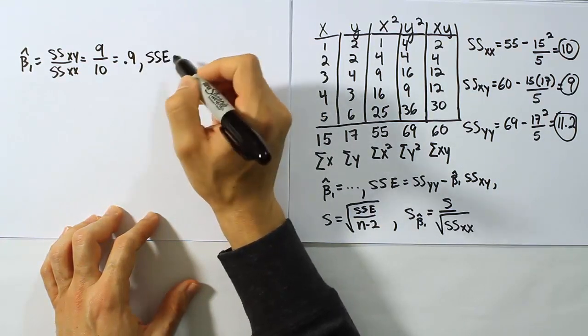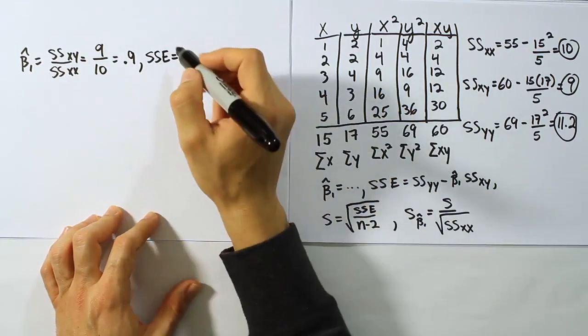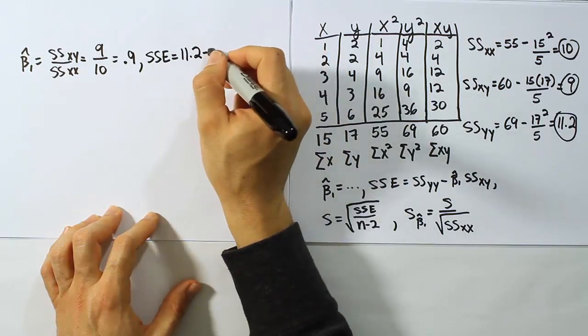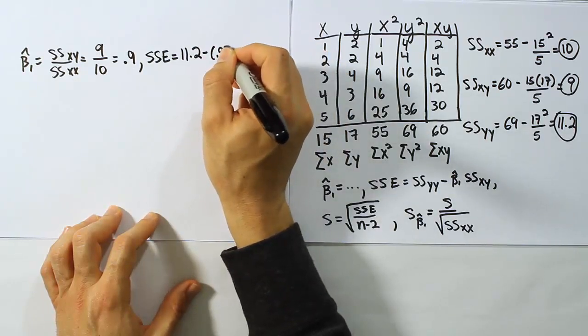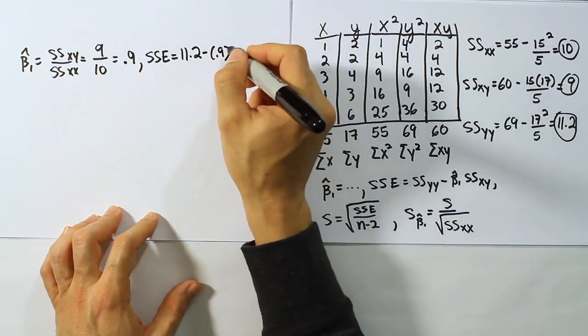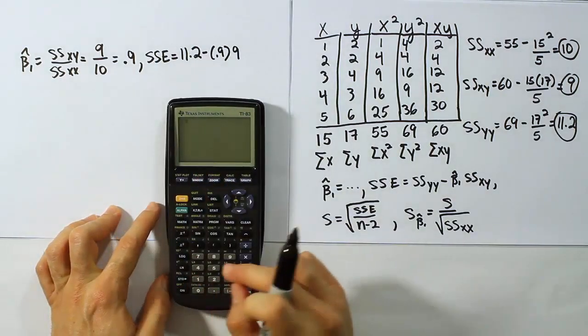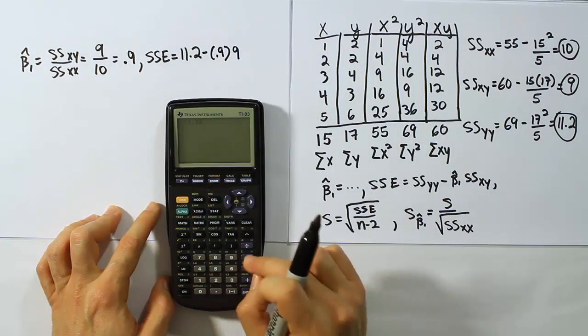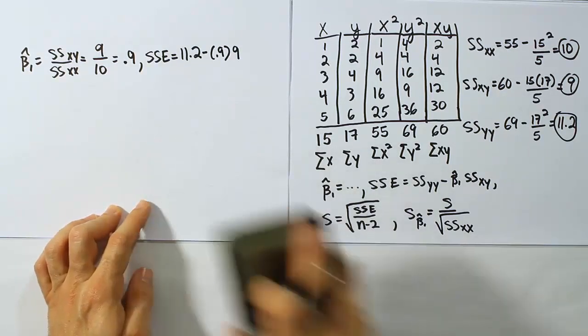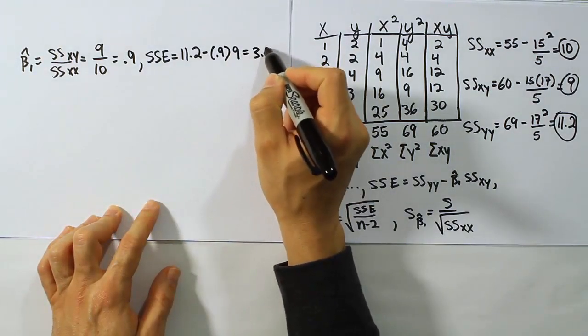So, SSE turns out to be SSyy, that's going to be 11.2. Then, we're going to have minus the beta 1 value, which we found out was 0.9 just a moment ago, times the mixed term. Now, the mixed term is 9. Let's work that out and see what that gives us. So, I have 11.2 minus 0.9 times 9. And when we're done, we get 3.1 for that answer.